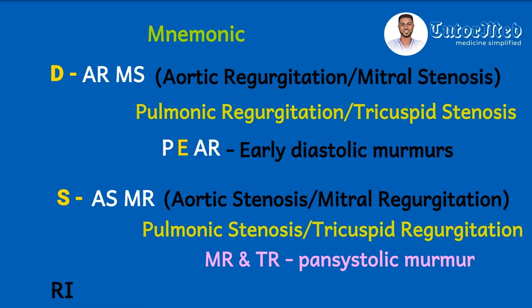Still on this topic, I want to add information about which phase of breathing makes these murmurs louder — inspiration or expiration. The mnemonic is RI and LE: right-sided murmurs are accentuated during inspiration (RI), while left-sided murmurs such as aortic stenosis and mitral stenosis are made louder during expiration (LE).